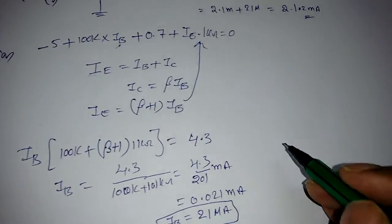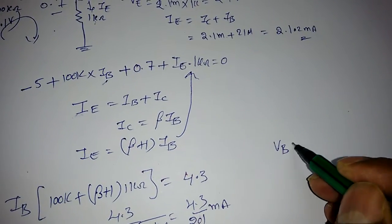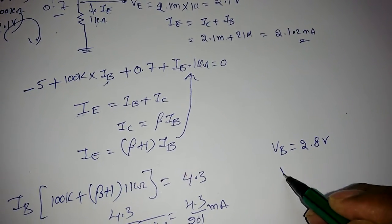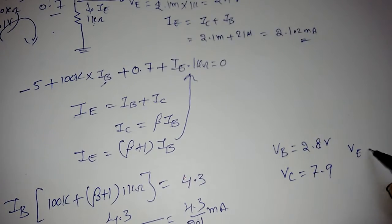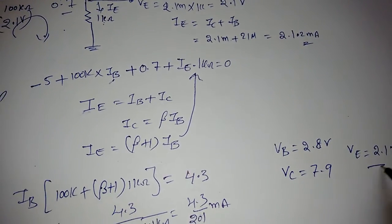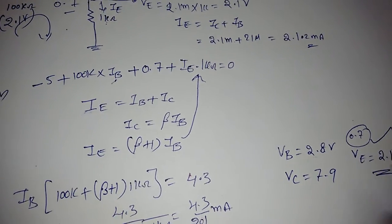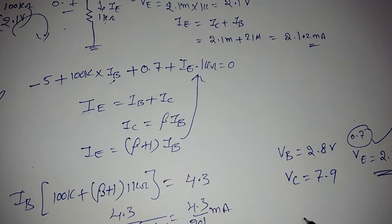So VB = 2.8 or 2.7 volts, VC = 7.9 volts, VE = 2.1 volts. Now VBE is 0.7 volts only, so it is in forward bias.